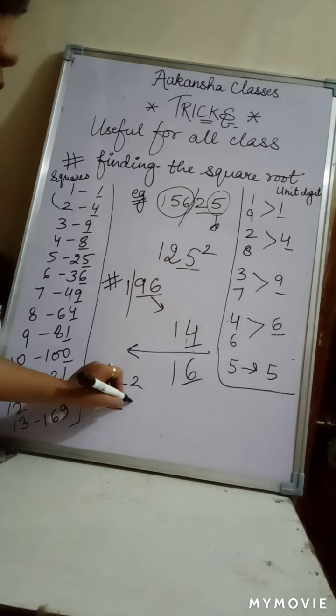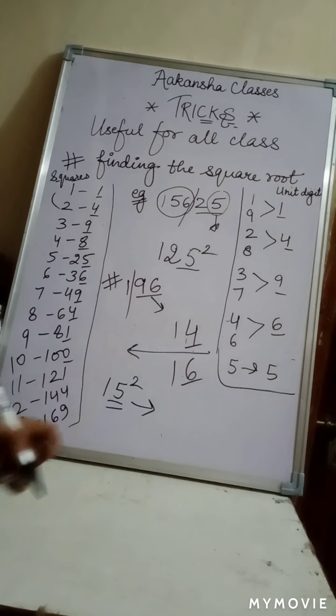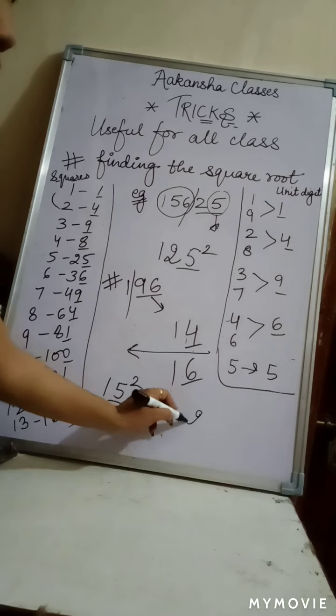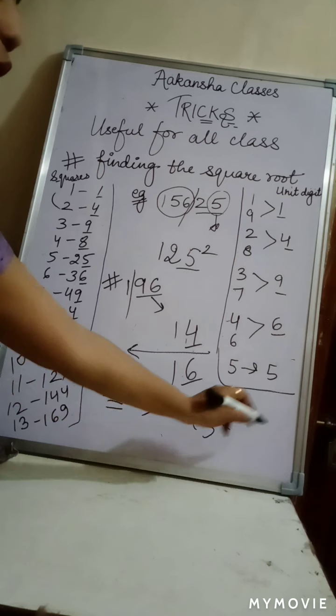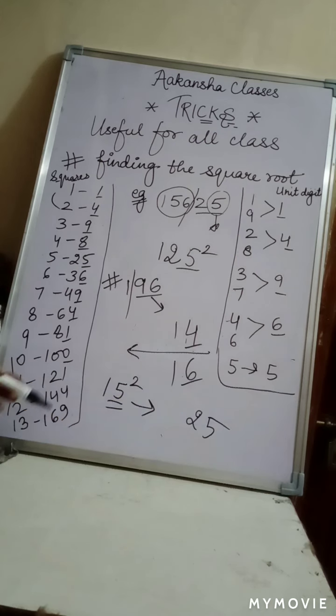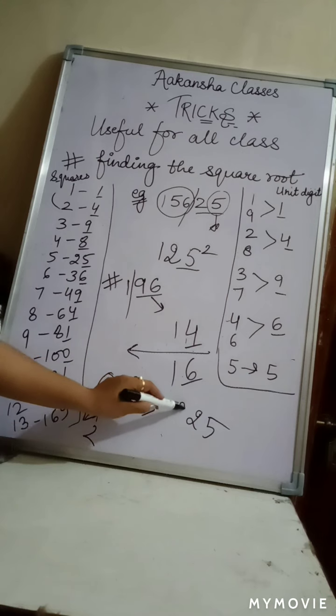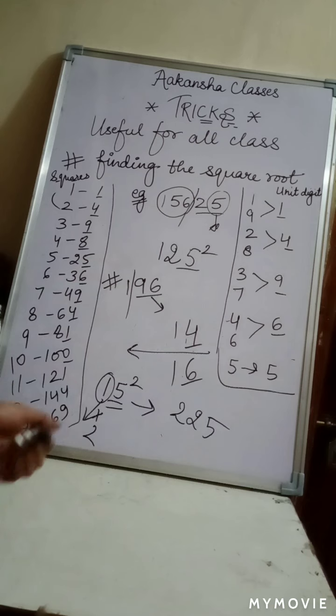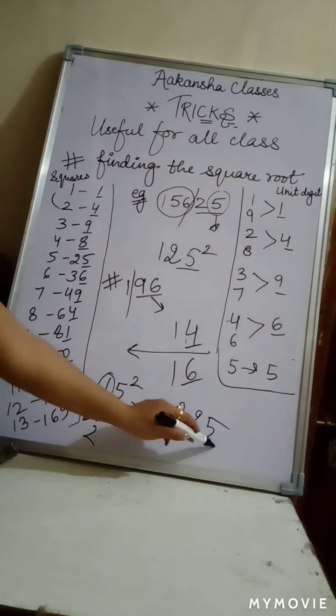Now the value is, the next you will do just the next consecutive number multiply. After 1, we have 2. Here 1 times 2. Now see, 15 square is 225. 16 square, what will happen? 256.